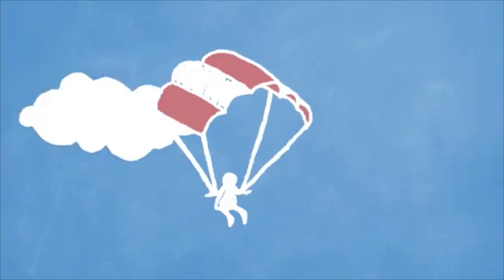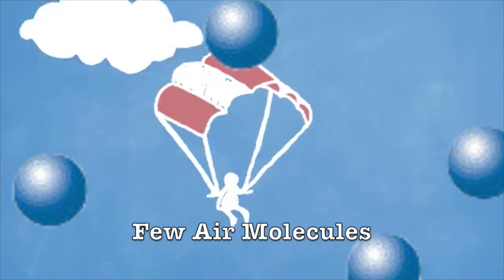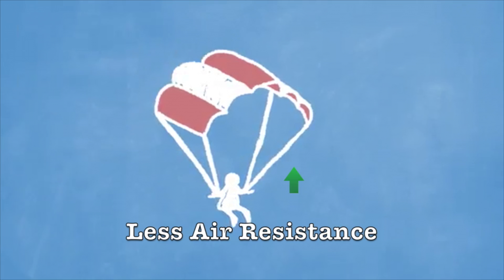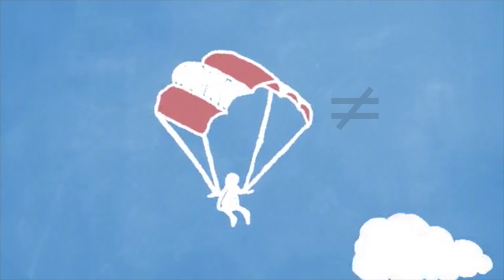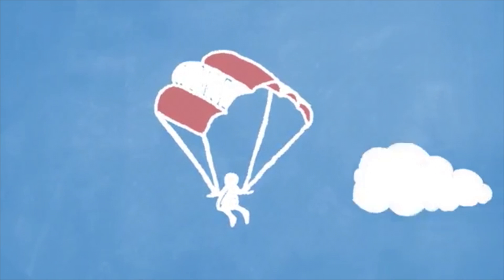However, in the small surface area parachute, the air molecules weren't able to come into contact as frequently, and thus the air resistance that accumulated was reduced, leaving the two forces of air resistance and gravity unbalanced. That is why the smaller parachute fell quicker.